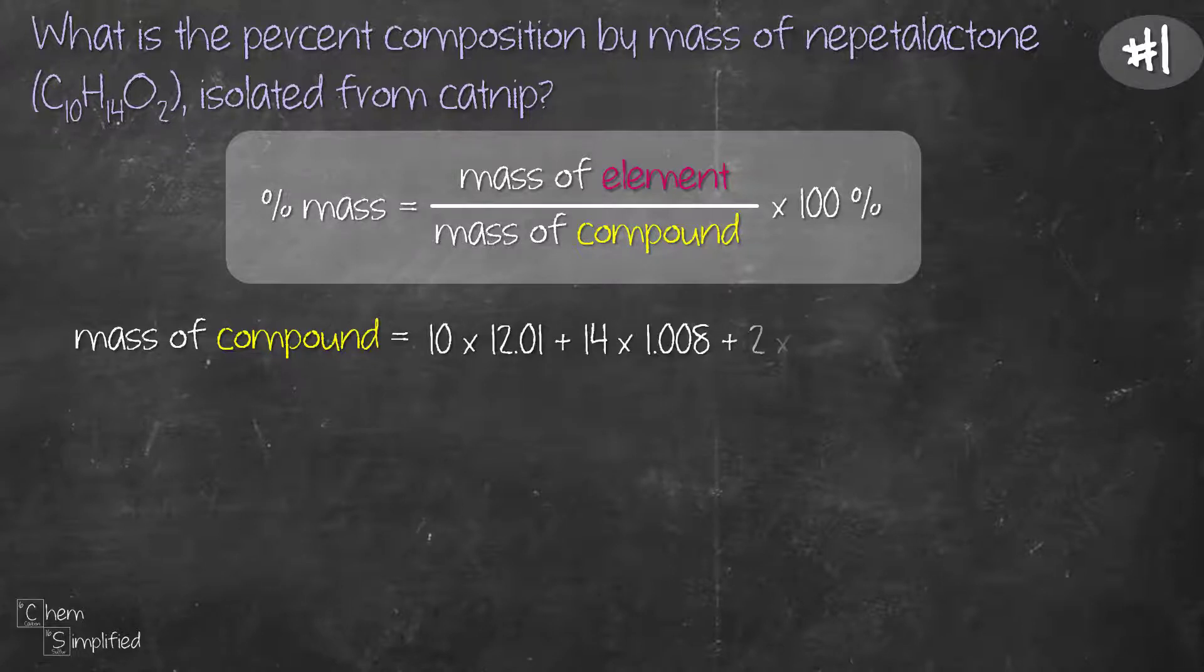We'll need to find the atomic mass of each atom and then multiply by the number for each atom. Carbon is 12.01, we times it with 10 since we have C10, and then H is 1.008, so we times that with 14 because we have H14. Then O is 16.00 and we times that with 2 because there's O2.